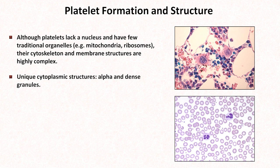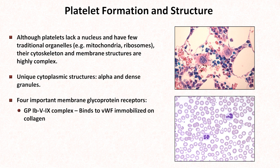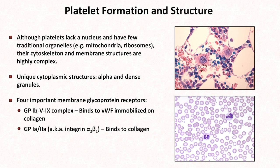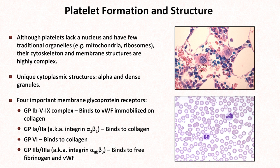Platelets also have many different types of membrane glycoprotein receptors, of which there are debatably four particularly important ones. There is the GP1B5-9 complex, which binds to the multimeric protein von Willebrand factor after it has been immobilized on exposed collagen. GP1A2A, also called integrin-alpha-2-beta-1, binds to exposed collagen directly, as does GP6. And a receptor called GP2B3A, also called integrin-alpha-2b-beta-3, binds to free fibrinogen and von Willebrand factor.